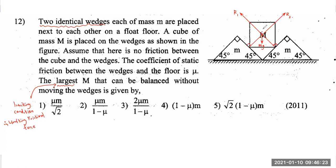These reaction forces act perpendicular to the surfaces. The angle they create with the vertical will be 45 degrees, because when you draw the diagonals of a square, the diagonal is at 90 degrees, and the line Mg bisects that angle. Therefore this is 45° and this is 45°.